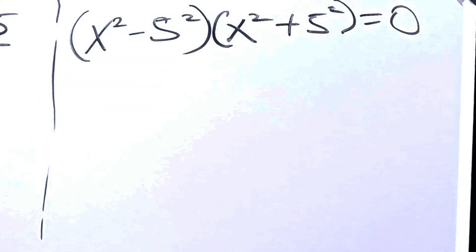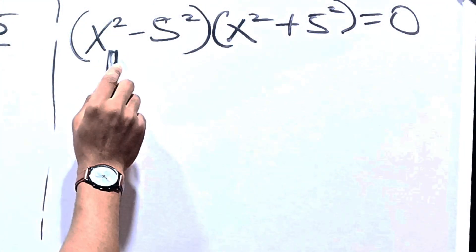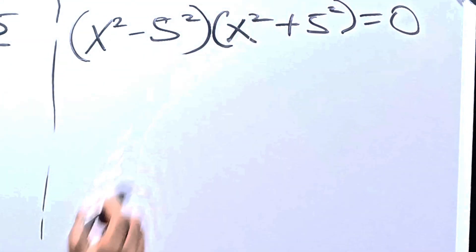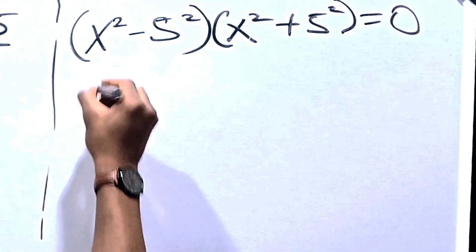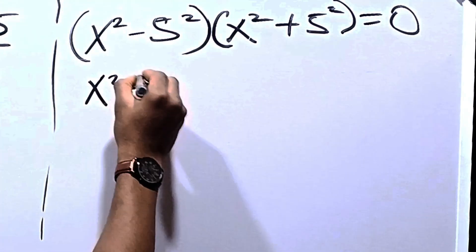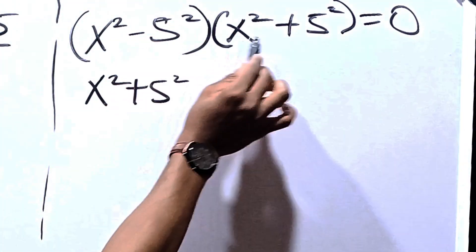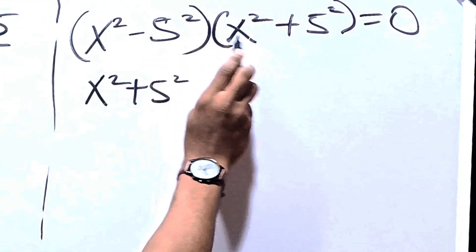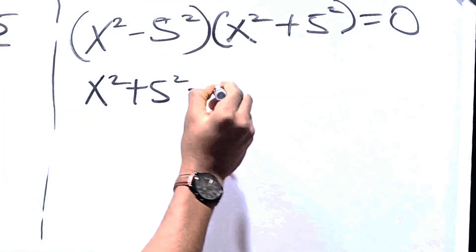Now, from the first factor x squared minus 5 squared, using difference of two squares again, we get x equals plus or minus 5. Then from the second factor, x squared plus 5 squared, which gives us the remaining answers we're looking for.